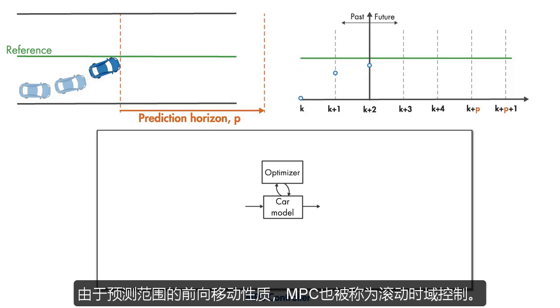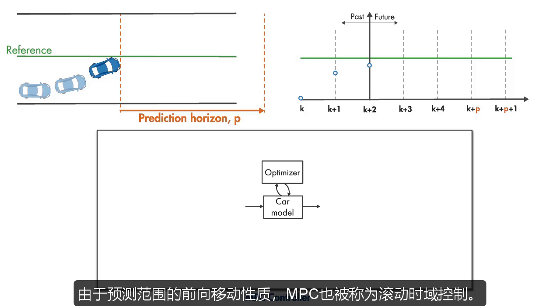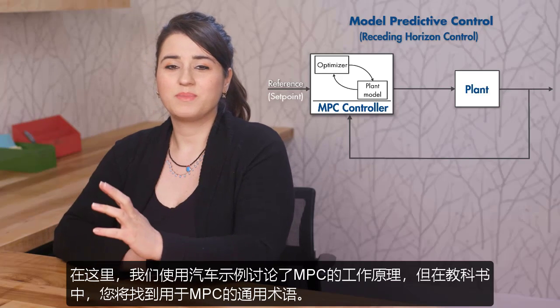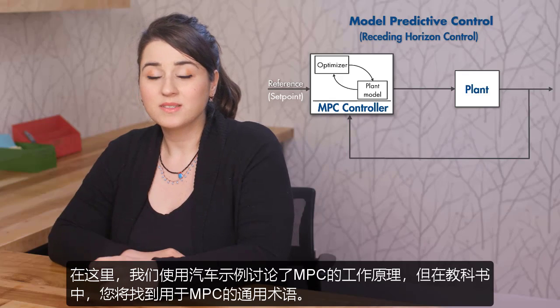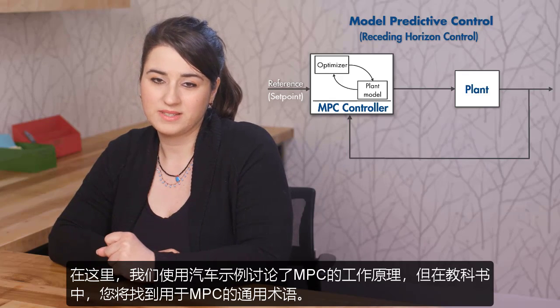Because of the forward-moving nature of the prediction horizon, MPC is also referred to as receding horizon control. Here we've discussed MPC's working principles using the car example. But in textbooks, you'll find generic terminology used for MPC.